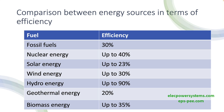Geothermal energy is a renewable energy source that uses heat from the earth's interior to generate electricity. The efficiency of geothermal power plants varies depending on the location and technology used, but the average efficiency is around 10 to 20 percent. The advantage of geothermal energy is that it is clean and renewable, but the disadvantage is that it is limited to certain locations and can have significant environmental impacts.